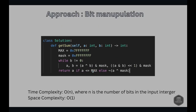Looking at the code: we define max to handle overflow for a 32-bit integer, ensuring we only consider 32 bits. The loop continues until B becomes 0.